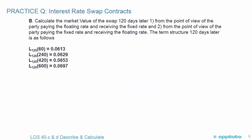You know the value of a swap at initiation is zero, but then as time goes on, you need to calculate the market value of the swap. This is a CFA Level 2 practice question where you calculate the market value of the swap 120 days later, from the point of view of the party paying the floating rate and receiving the fixed rate, and from the point of view of the party paying the fixed rate and receiving the floating rate. The term structure 120 days later has changed.